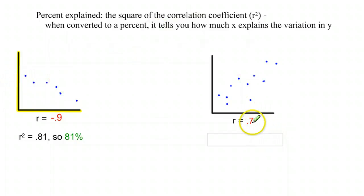When you start to get down into the 0.7s, still pretty good correlation here, that squaring is going to really reduce it quite a bit. So r squared equals only 0.49, which means that you can predict about 49%. So roughly half of the change in Y could be predicted by X.